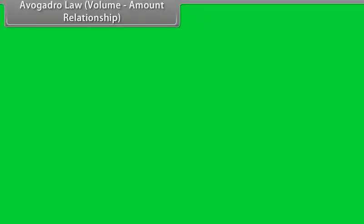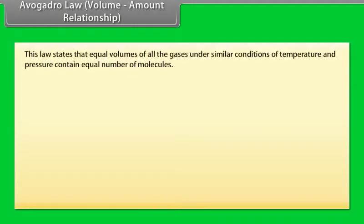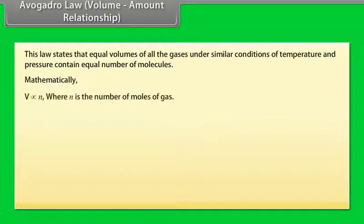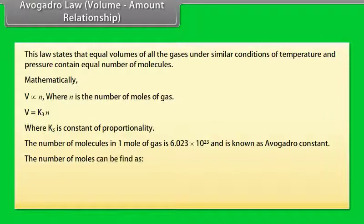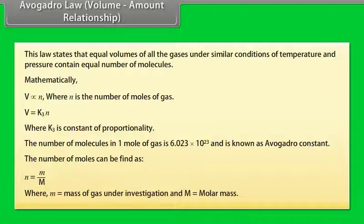Avogadro's Law — Volume-Amount Relationship: this law states that equal volumes of all gases under similar conditions of temperature and pressure contain equal numbers of molecules. Mathematically, V ∝ N (number of moles); V = K₃N. The number of molecules in one mole of gas is 6.023 × 10²³, known as Avogadro's constant. The number of moles is defined as N = m/M, where m is the mass of the gas under investigation and M is the molar mass.